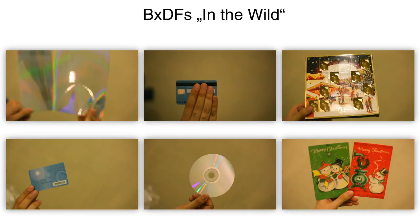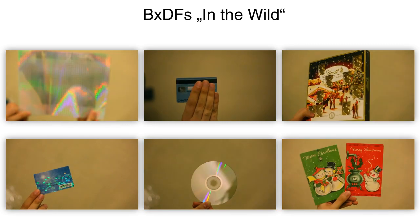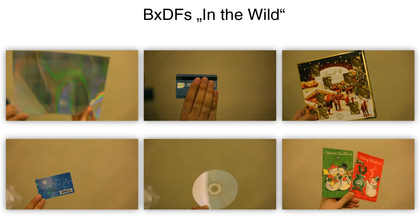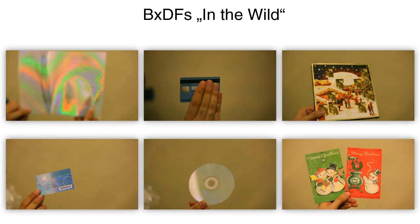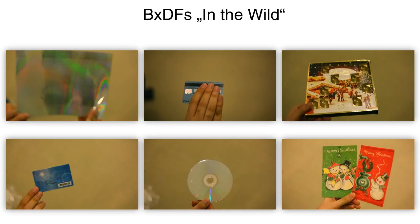Materials with engineered reflectance properties are part of our daily life. Postcards, wrapping paper, magazines, and other printed goods are more appealing when exhibiting interesting shading effects. Credit cards and banknotes encode security features into their reflectance to prevent counterfeiting.